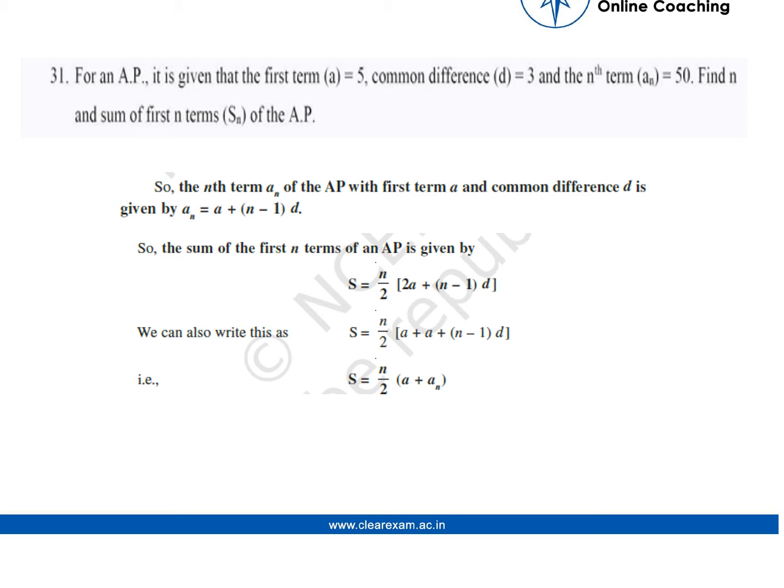In this question, we are provided with a problem related to arithmetic progression. Here we are provided with the first term a, the common difference d, and the nth term which is 50. We have to find the sum of the first n numbers.